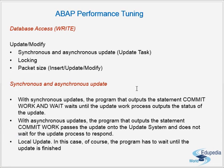In local update, the program has to wait until the update is finished. So we have three types: synchronous update ('COMMIT WORK AND WAIT') where the dialog part waits until update is completed; asynchronous update ('COMMIT WORK' only) where the dialog hands over processing and continues; and local update, where the program also waits until the update work process finishes.